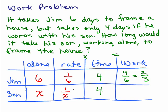But we'll get to that in a minute. We could simply do the rate times time. One over x times four is four over x. So his son gets four over x of the work done. And we know that is going to be one-third because two-thirds plus one-third equals one, right?